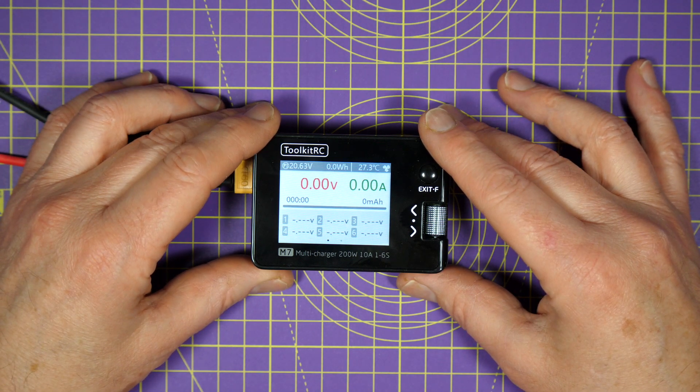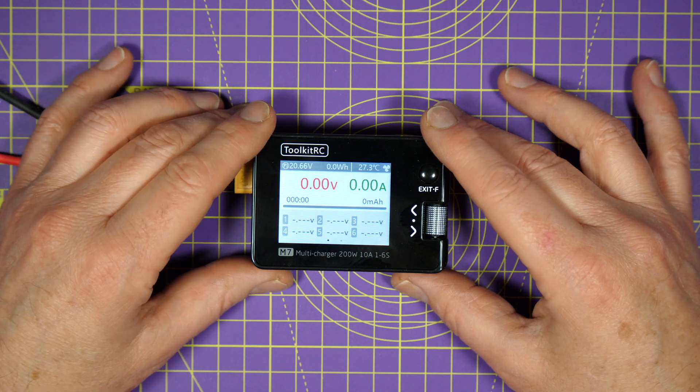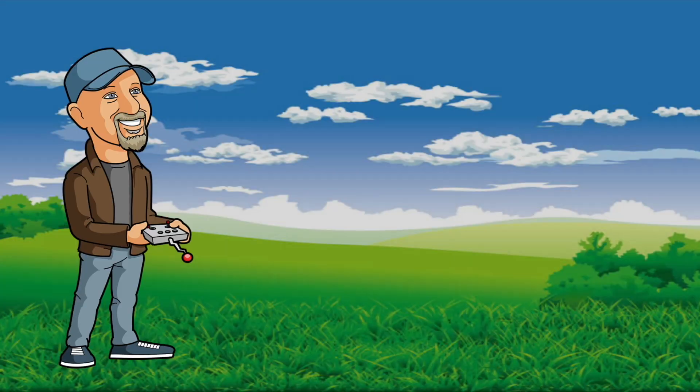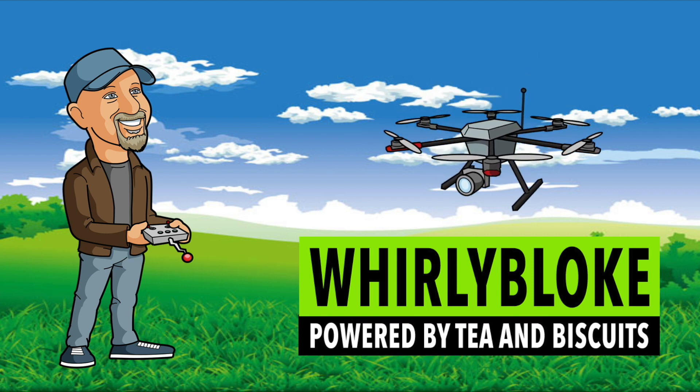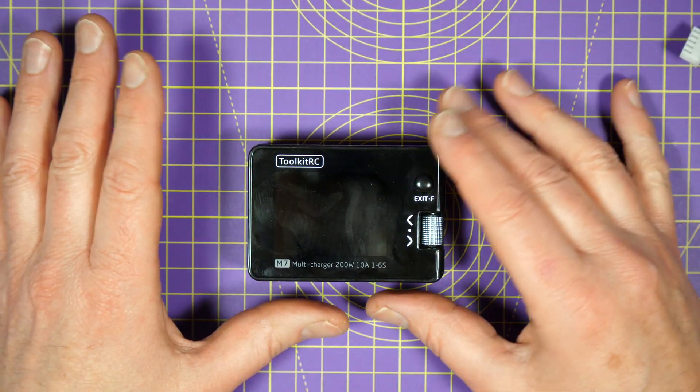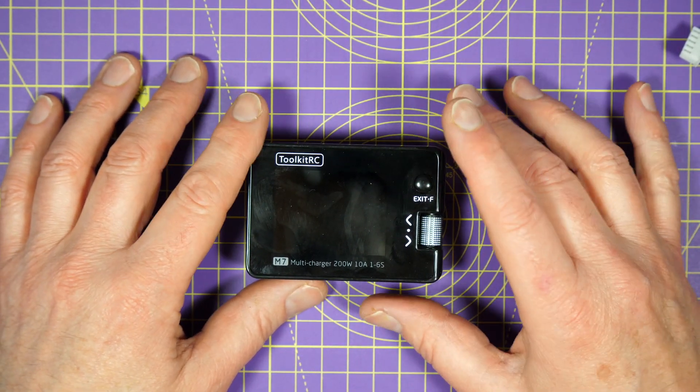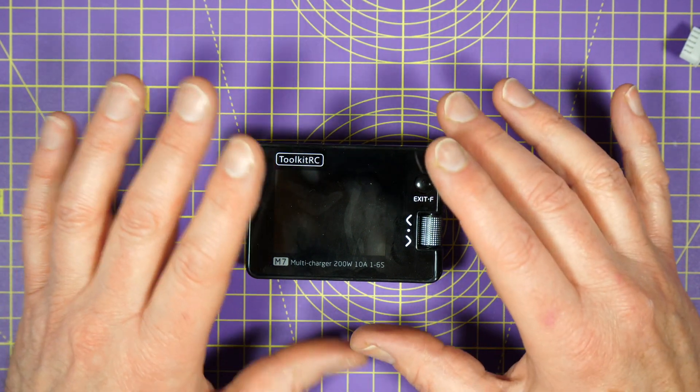Let's take a closer look. Hello and welcome to the Whirly Bloke channel. This M7 multifunction charger has all the same features as the M6, but Toolkit RC have made some notable improvements.